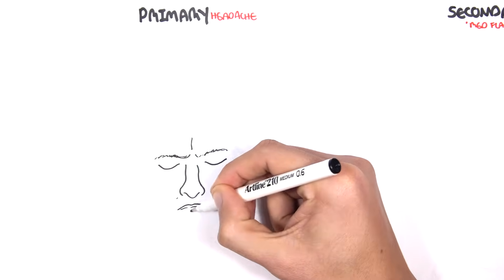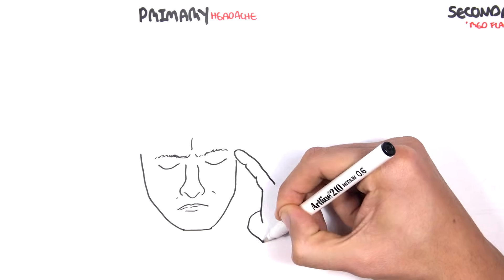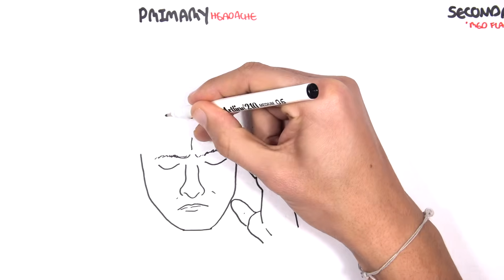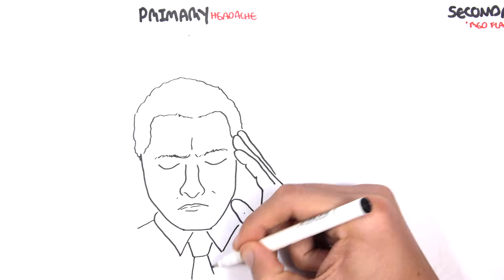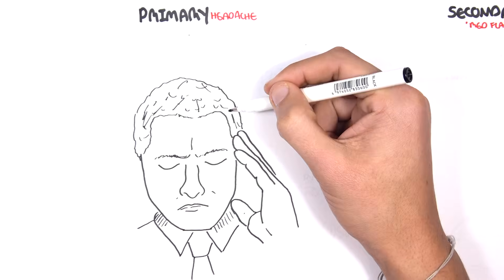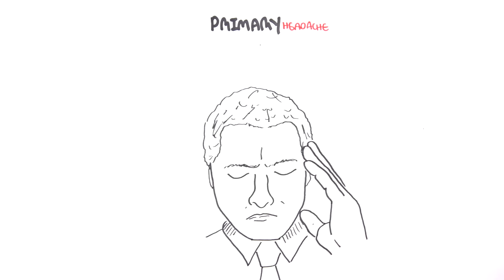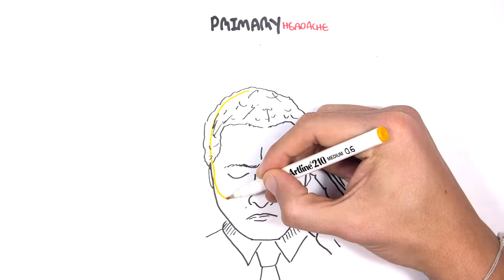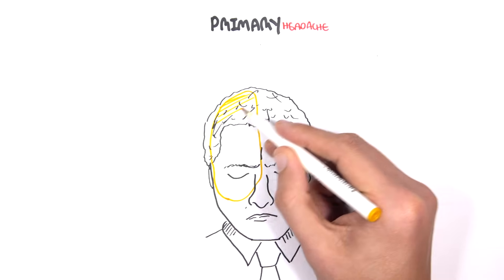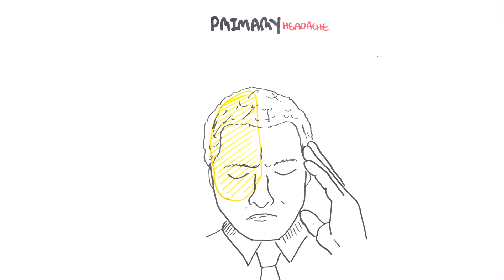Here I'm drawing this person with a headache. There are many types of primary headaches. A very common type is one that affects one side of the face, unilateral and sort of upper half, and this is known as the migraine headache.